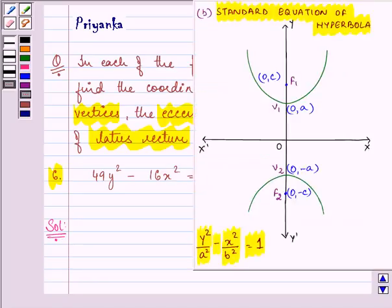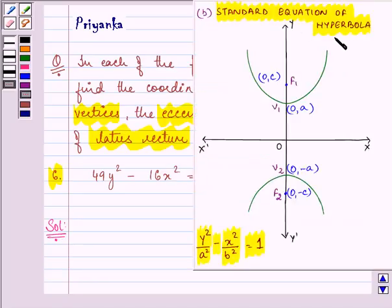first of all, we should be well-versed with the standard equation of hyperbola when the foci lies on the y-axis and it is y²/a² - x²/b² = 1.